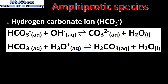Let's look at another example of an amphiprotic species: the hydrogen carbonate ion, HCO3⁻. In the top reaction, the hydrogen carbonate ion is donating a proton to the hydroxide ion, therefore it's acting as a Brønsted-Lowry acid. In the bottom equation, the hydrogen carbonate ion is accepting a proton from the hydronium ion, therefore it's acting as a Brønsted-Lowry base. In the top reaction, the conjugate base of the hydrogen carbonate ion is the carbonate ion, CO3²⁻. In the bottom reaction, the conjugate acid of the hydrogen carbonate ion is H2CO3.